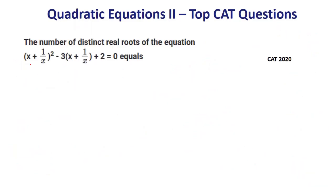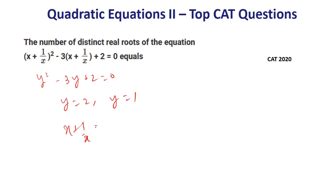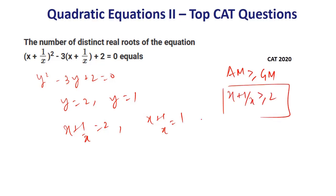Next: let y = (x + 1/x)². Then y² - 3y + 2 = 0, so y = 2 or y = 1. By AM ≥ GM, x + 1/x ≥ 2 for positive x. So the only valid case is x + 1/x = 2. The number of distinct real solutions is 1.